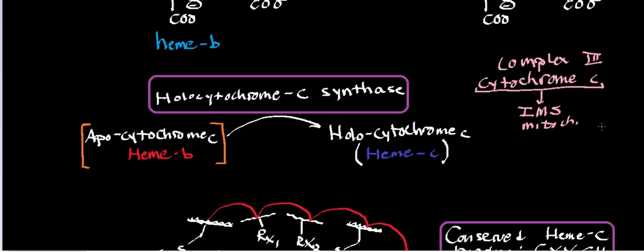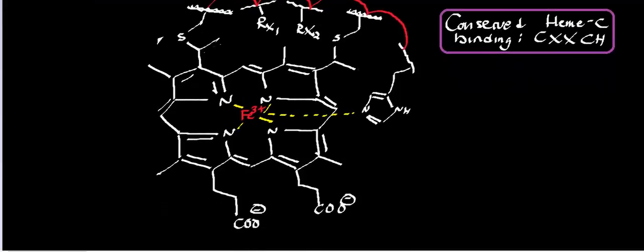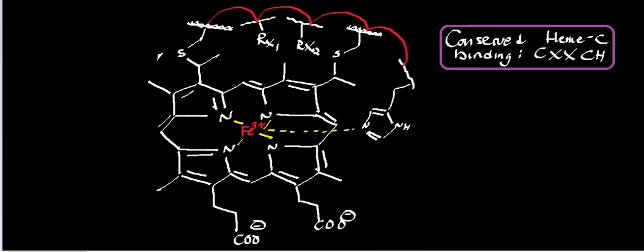Some important things to understand: why is it called cytochrome C? The term cytochrome usually implies that it has a heme prosthetic group. The 'C' here implies that the type of heme we're looking at is heme C. If we scroll down, you can see the general setup of what cytochrome C will look like once we've attached the heme to it.